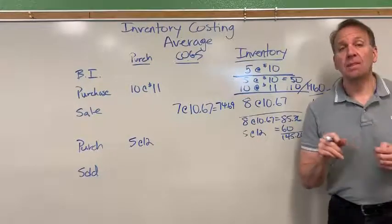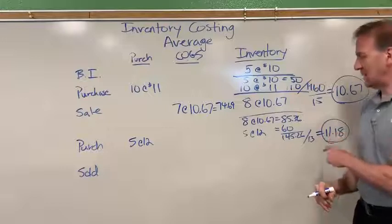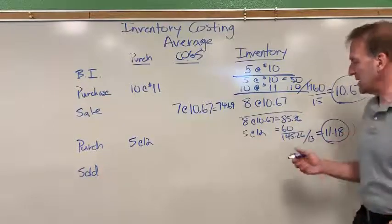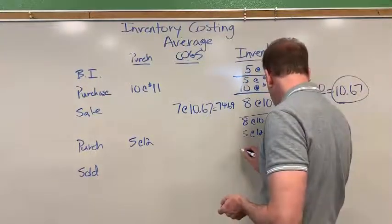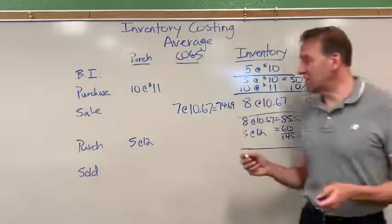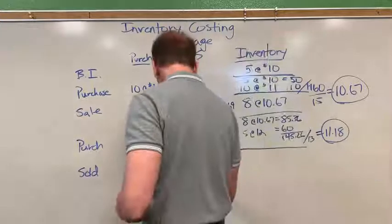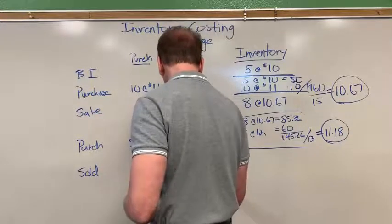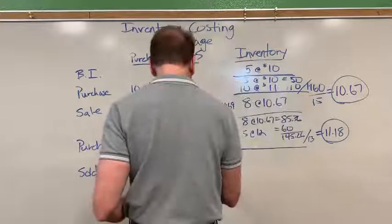This is slightly rounded because it went beyond the eighteen cents. All right, so let's now do our final sale. If you recall, we sold six, so then six at twenty dollars. But we're calculating the cost of goods sold, so it's six at eleven eighteen.